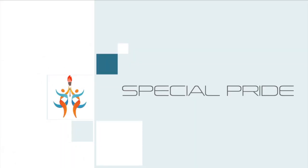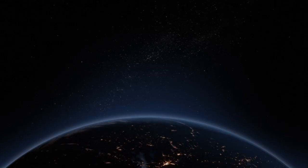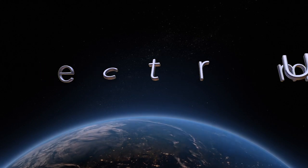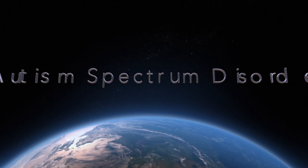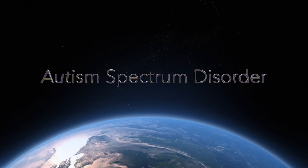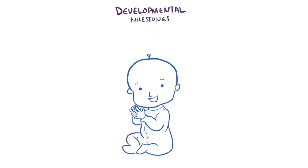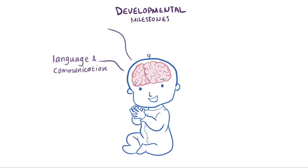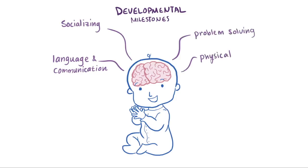Even though everyone develops at slightly different paces, almost everyone hits the same general developmental milestones and learns the same set of skills at about the same time, more or less. These are things like language and communication, socializing, cognitive skills like problem solving, and physical milestones like walking, crawling, and fine motor skills, all of which progress.